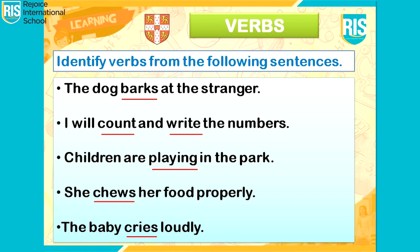Third sentence: children are playing in the park. 'Playing' is an action word. Hence, it is a verb. Fourth sentence: she chews her food properly. 'Chews' is an action word. Hence, it is a verb. Fifth sentence: the baby cries loudly. 'Cries' is an action word. Hence, it is a verb.